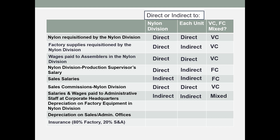Depreciation on factory equipment in the nylon division: this specifies that the equipment is used in the nylon division, so it's directly traceable to that division. However, it is an overhead cost and is indirect to each unit produced. Depreciation, because it is fixed for a given time period — usually a year — is considered a fixed cost. Even if you use double declining balance or the modified cost recovery system, it will change year to year, but over the short run period of a year, depreciation is a fixed cost.